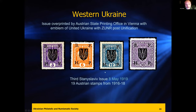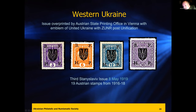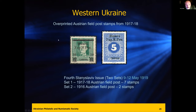The third Stanislaw issue is interesting — collectors call these the 'bird stamps' because the overprint looks like a bird. These are fairly easy to obtain. The Kronprinz stamps were printed on granite paper — you can see the darker fibers. These are the common ones; to find one without the granite paper is very rare and hard to find. This is the fourth Stanislaw issue of overprints.